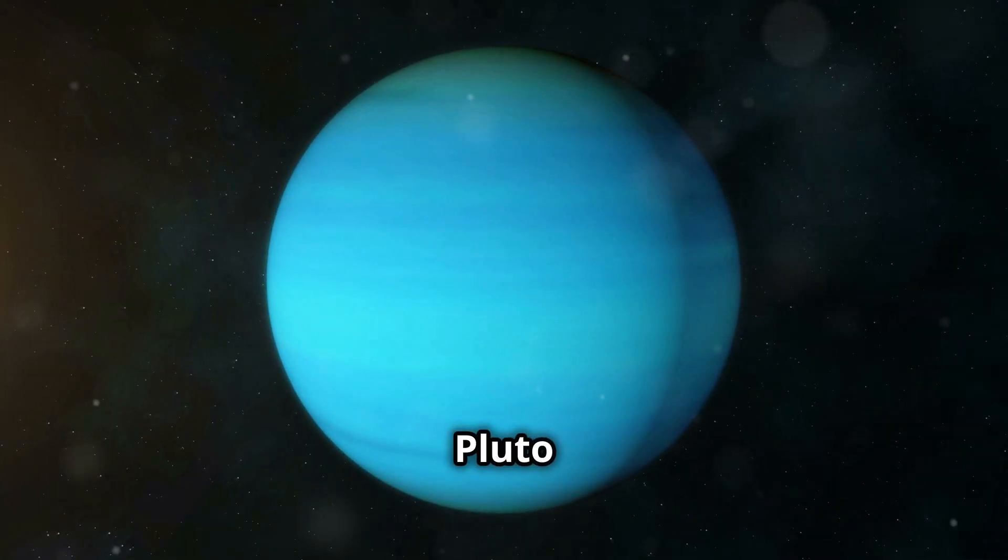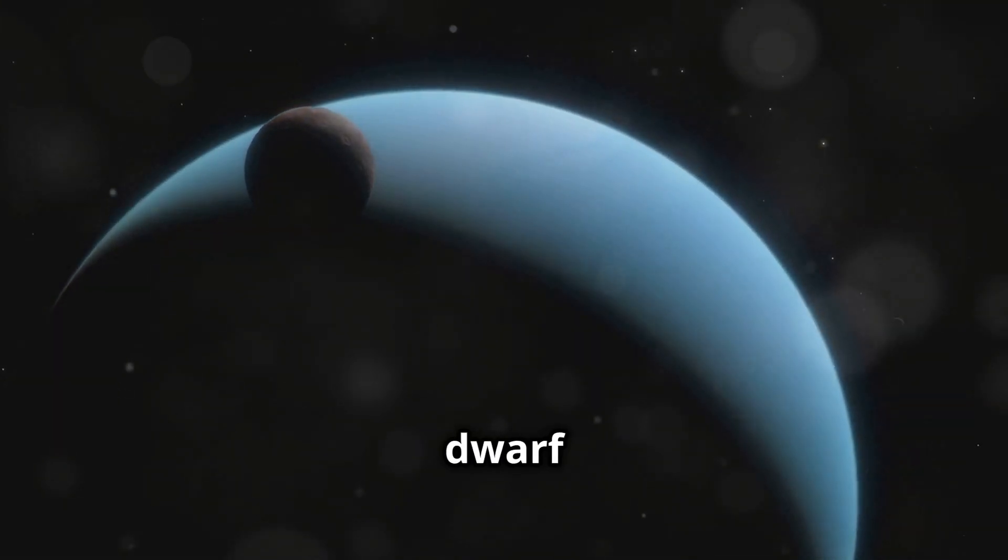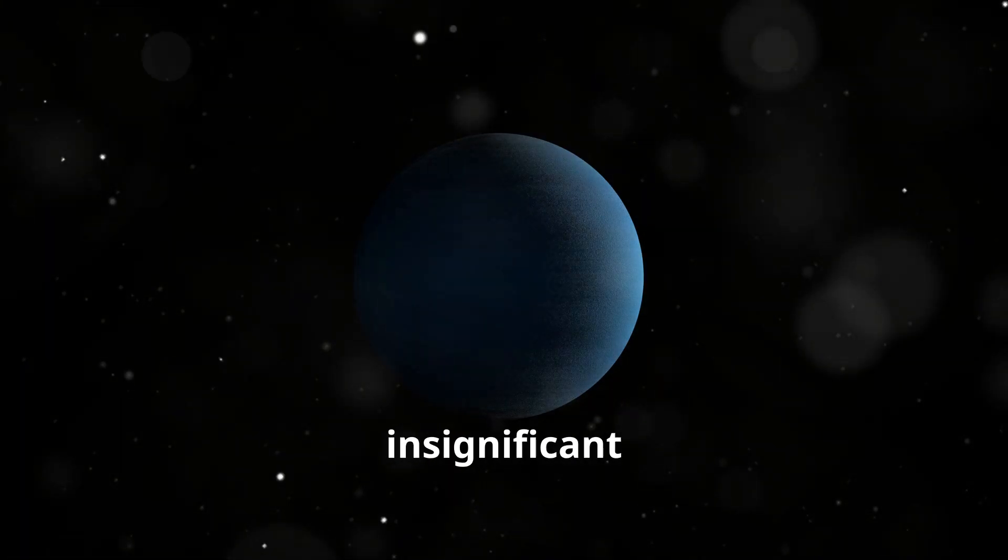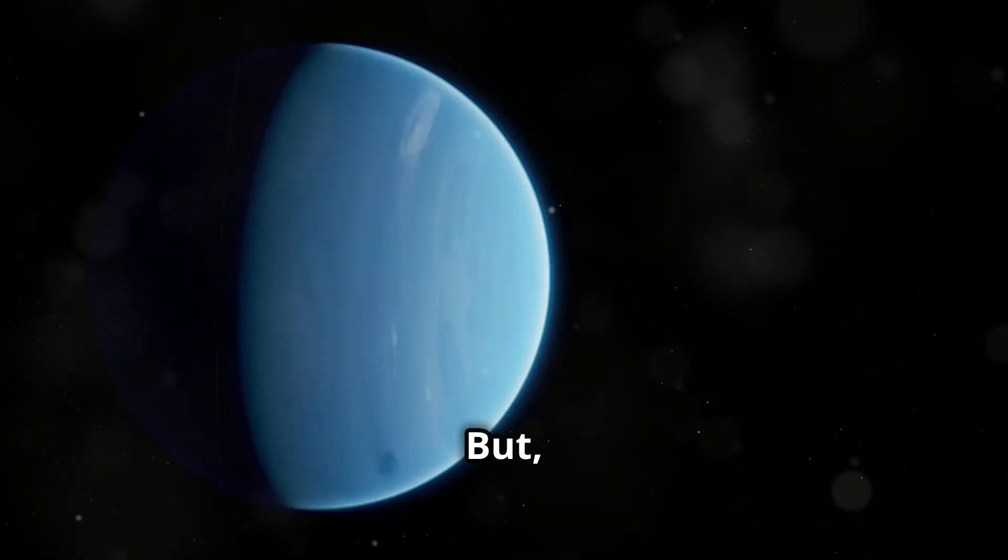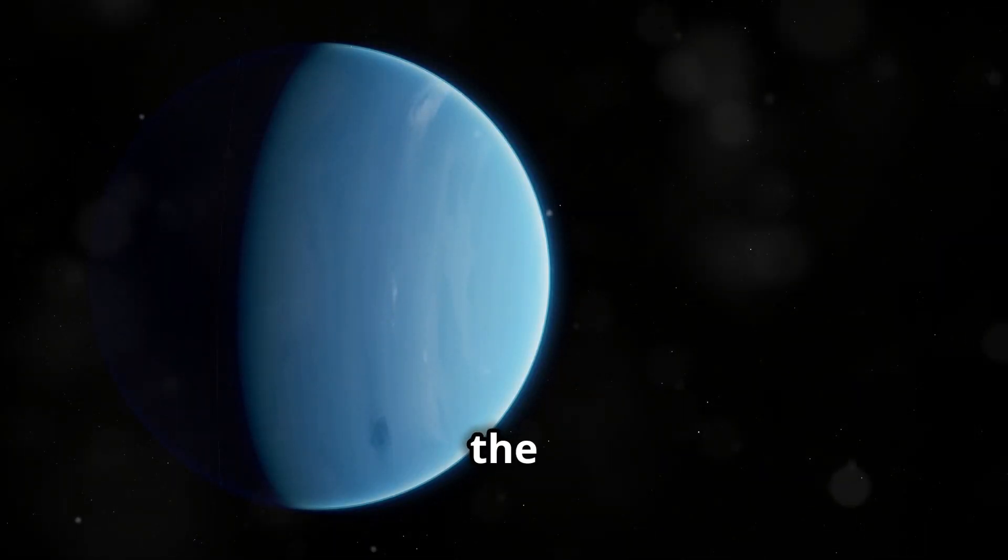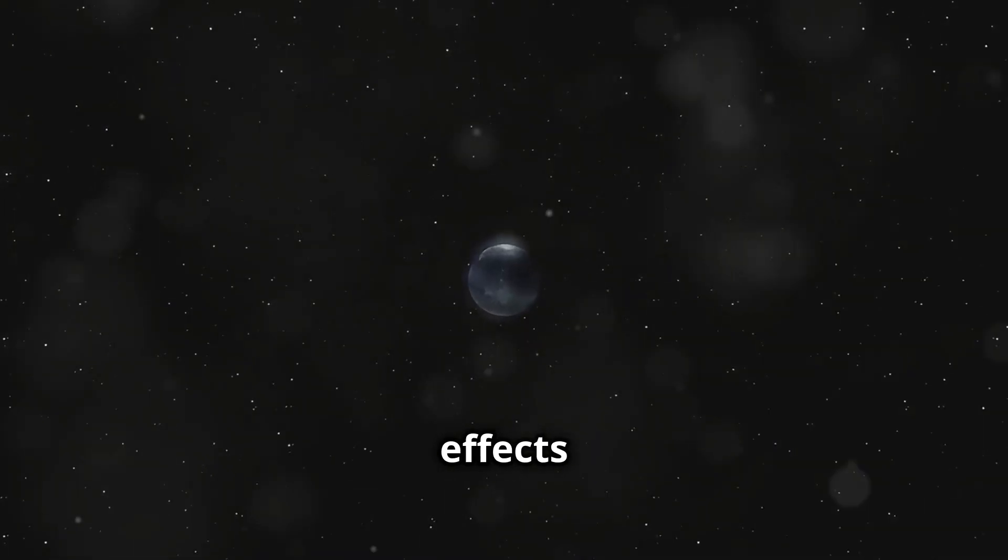Pluto, the little giant of the cosmic dance. Pluto, which was downgraded to a dwarf planet in 2006, may seem small and insignificant in our solar system, but even though it's small, it participates in the gravitational dance of the planets. If Pluto suddenly disappeared, the immediate effects would be small.